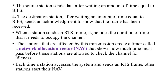When a station sends an RTS frame, it includes the duration of time that it needs to occupy the channel. Stations affected by this transmission create a timer, and any station willing to transmit during this time will be in a waiting state. This is called the Network Allocation Vector, which shows how much time must pass before these stations are allowed to check the channel. This is a simple format of the wireless LAN with this architecture.